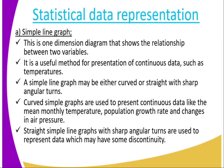We start by looking at the first one, which is the simple line graph. When we talk about the simple line graph, it is a one-dimensional diagram that shows the relationship between two variables. It is a useful method for the presentation of continuous data. Remember we said there are two types of statistical data: continuous data and discrete data. So for the simple line graph, it is used when presenting continuous data, like temperatures.